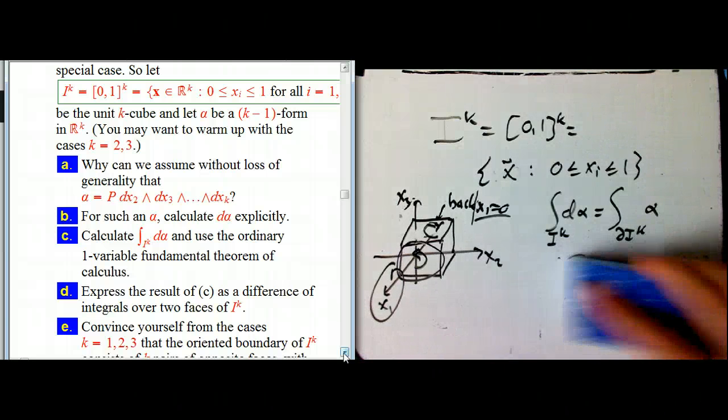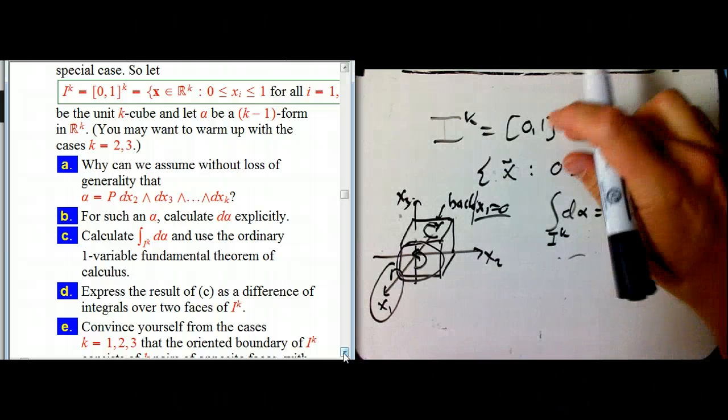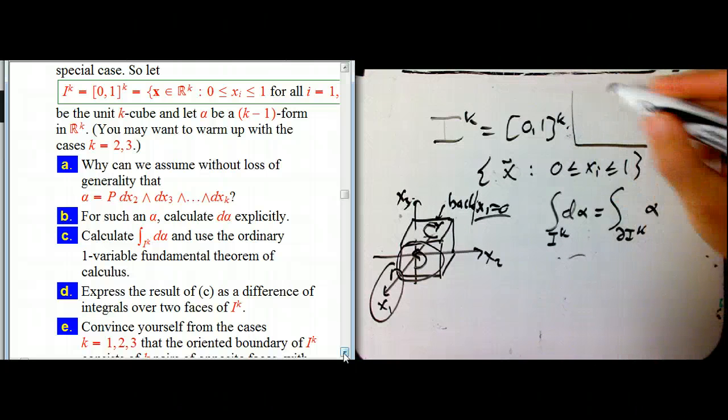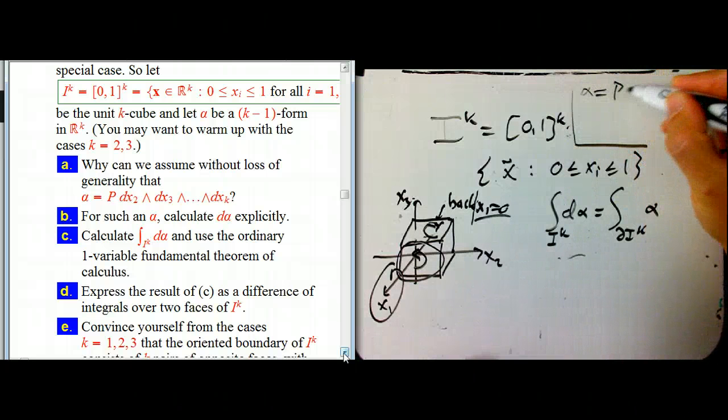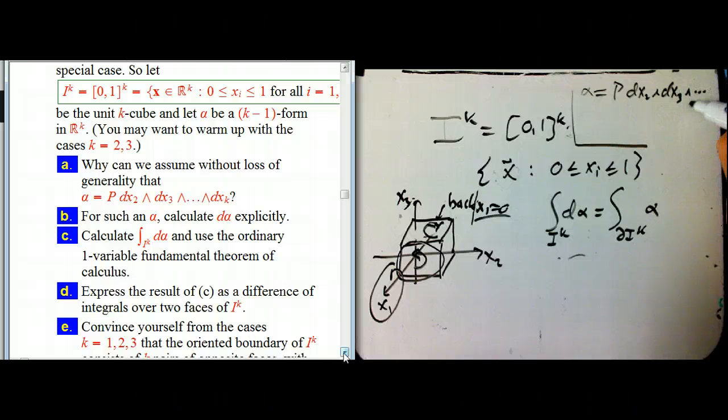So we're just going to assume that it's of this form and that's going to simplify our argument a bit. So that was getting a little messy. Let me put it up here. So alpha is just p and we're going to leave out the dx_1, and it's just going to be all the other dx's wedged together in that order. And this is what I want to show.